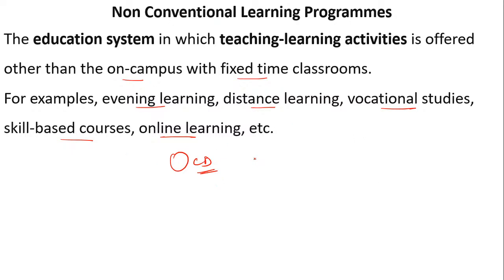The main aim of non-conventional learning is to bring back those students who have not been able to complete their studies. Evening learning is for adults who, because of family responsibilities, are not able to go to college during the day. Distance learning means there is distance between the institute and the students; they can buy courses and give exams whenever they want. IGNU is an example of distance learning — you pay fees, they send you study material, and you study at your own pace and just go to give the examination.